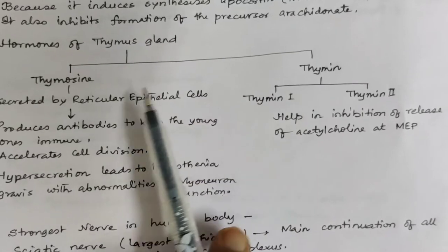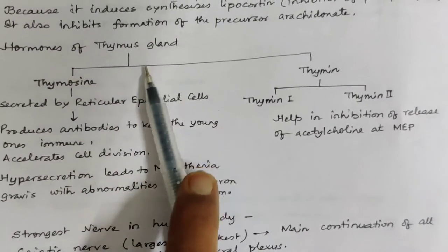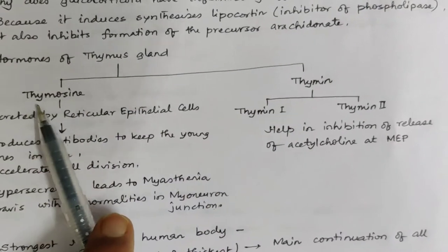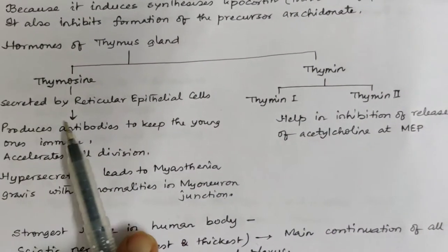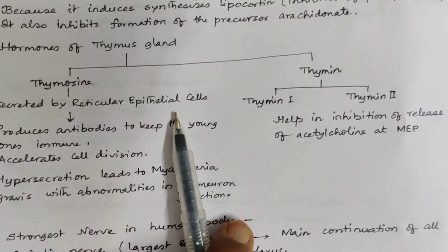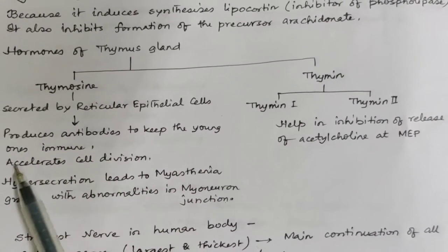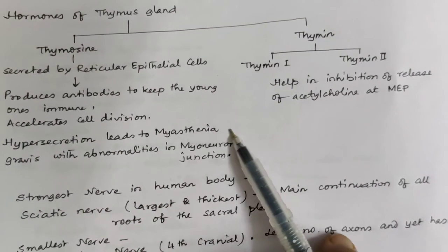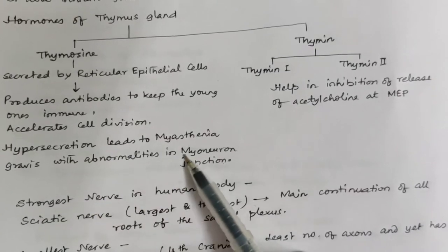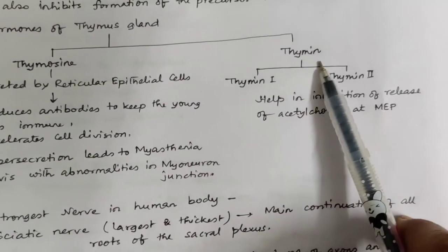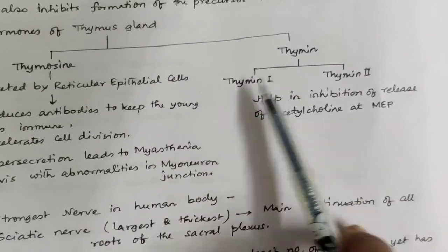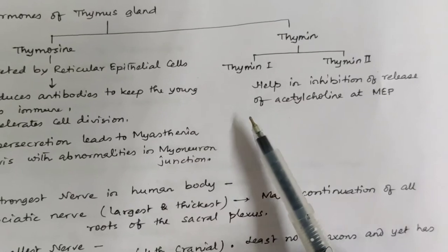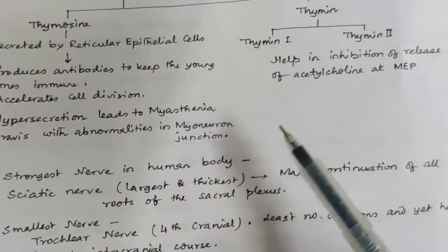The hormones of the thymus gland — the thymus is a gland in front of the heart in the chest region. It has two hormones: thymosin and thymin. Thymosin is secreted by reticular epithelial cells, produces antibodies to keep young ones immune, and accelerates cell division. Its hypersecretion leads to myasthenia gravis with abnormalities in the myoneural junction. Thymin may be of two types — thymin 1 and thymin 2 — and they help in inhibiting release of acetylcholine at the motor end plate.